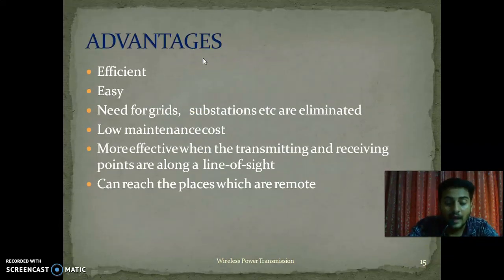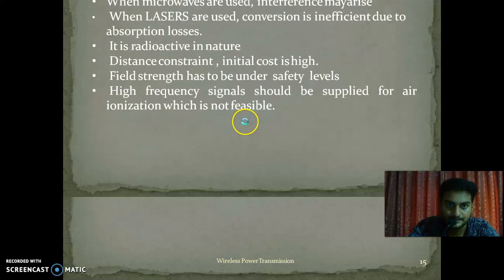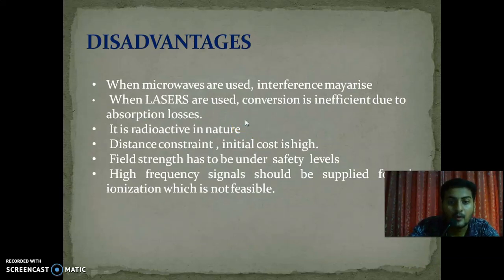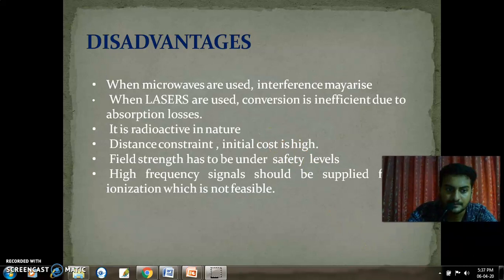The advantages of wireless transmission of power are: it is efficient and easy, the need for grids and substations are eliminated, low maintenance cost, more effective when the transmitting and receiving points are along a line of sight, and can reach remote places. The disadvantages are: when microwaves are used, interference may arise; when lasers are used, conversion is inefficient due to absorption losses; it is radioactive in nature; distance constraint; initial cost is high; field strength has to be under safety levels; and high frequency signals required for air ionization are not feasible.